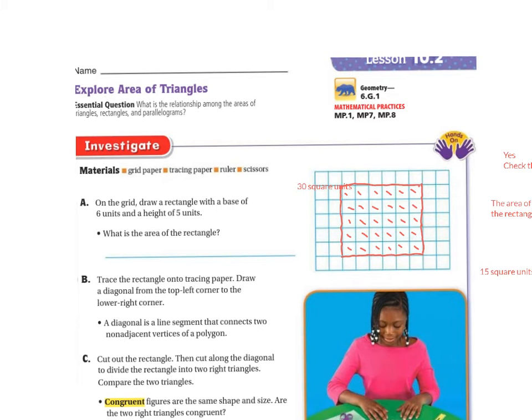So it's 30 square units. Instead of counting them, you could have multiplied, remember, base times height.